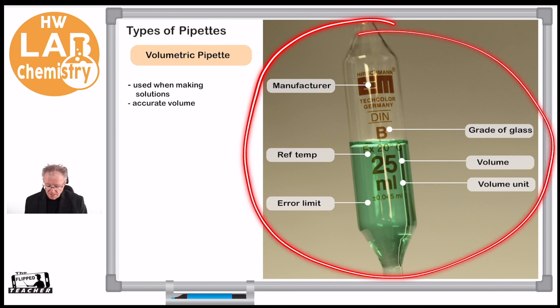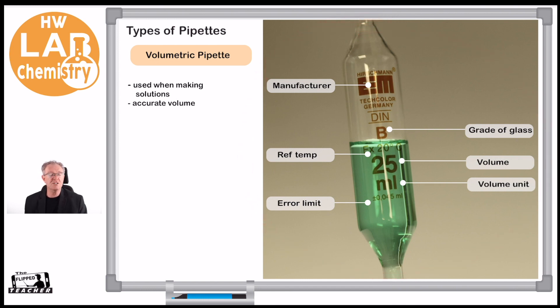As you can see from the close-up here, these are all the different things you see on the side of the pipette. This is known as a bulb volumetric pipette, and you can see we've got an error limit. So when we draw up some liquid, it's accurate to 0.045 of a milliliter—that's pretty incredible.